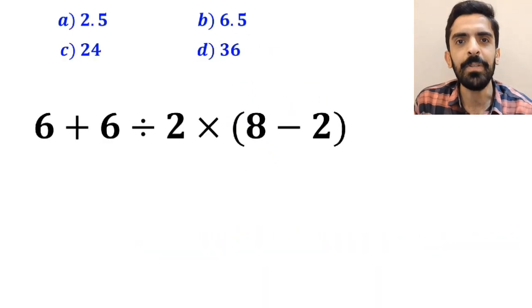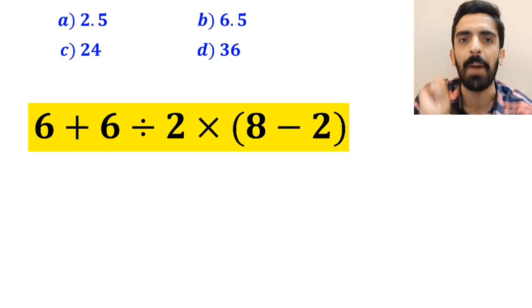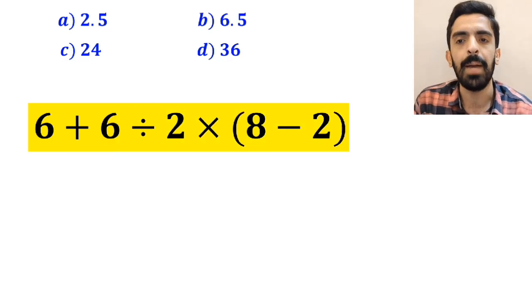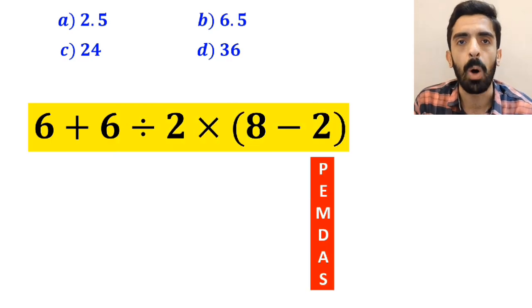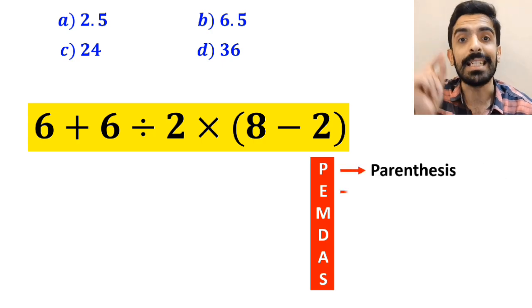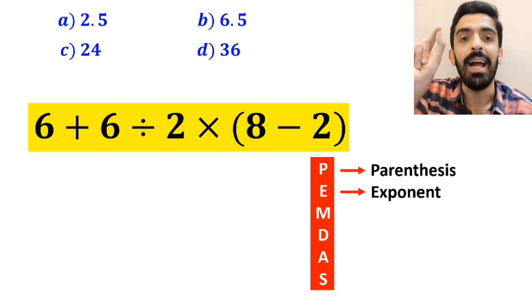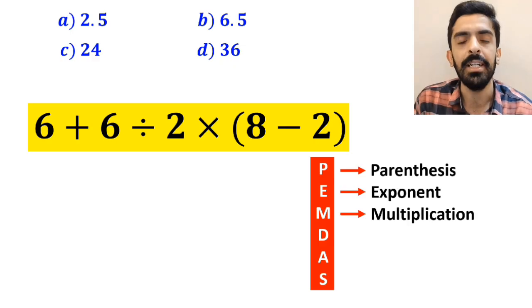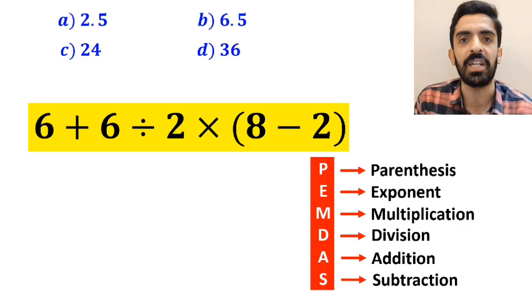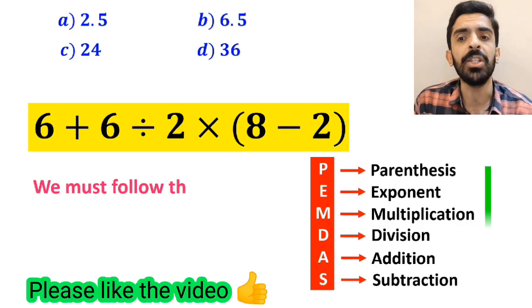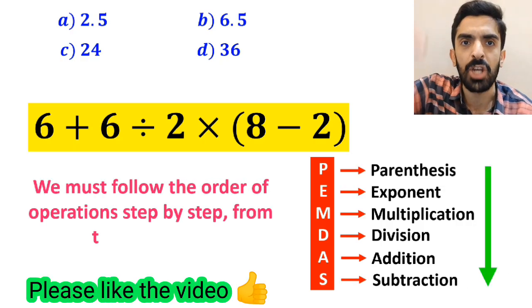Alright, now let me show you how to solve this expression properly. To solve this problem, we must follow the PEMDAS rule. And this rule, P stands for parenthesis, E stands for exponent, M stands for multiplication, D stands for division, A stands for addition, and S stands for subtraction. We must follow the order of operations step by step from top to bottom.